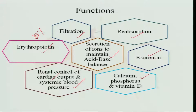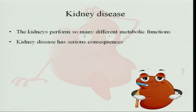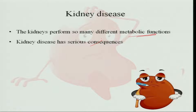Another important function is that vitamin D, which is essential for calcium and phosphorus absorption, is activated in the kidney. Therefore, kidneys have a vital role in the absorption of calcium and phosphorus, which are important for bone and teeth formation. Because kidneys perform so many metabolic functions, kidney diseases have very serious consequences on the overall functions of the body.